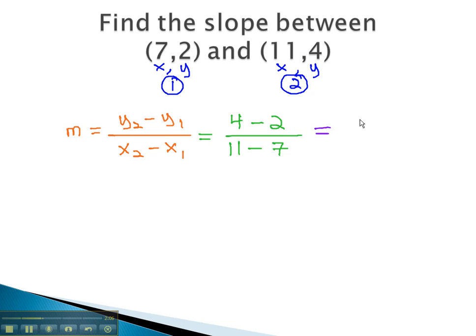By subtracting, 4 minus 2 is 2, over 11 minus 7 is 4, and reducing, we find the slope of this line that connects the two points, 7, 2 and 11, 4 is 1 half.